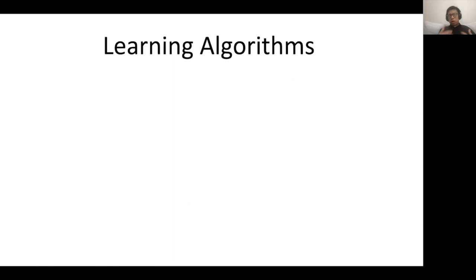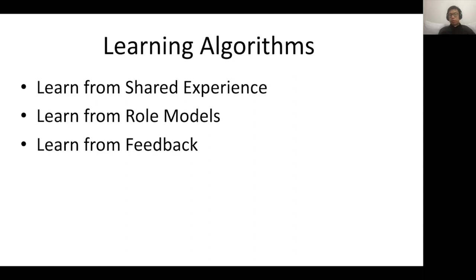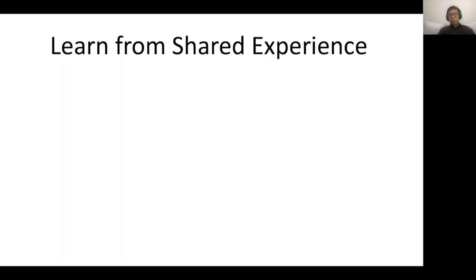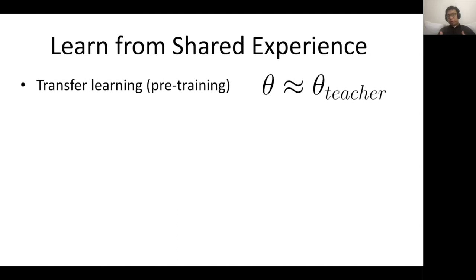We'll talk about four types of algorithms: learning from shared experience, learning from examples, learning from feedback, and learning through trial and error. The first one — learning from shared experience — is kind of what we're doing right now. Someone shares experience, either what works or doesn't, and I treat it as a kind of pre-training or transfer learning. Basically, you initialize your weights from a different person's weights.